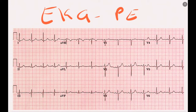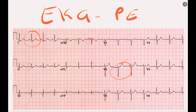This is a normal EKG that we're looking at right now. What's normal about it? Well, the voltages aren't too big, everything looks about the right size. It's sinus rhythm because you've got a positive P wave in two and the P wave is negative in AVR, so that's coming from the right spot. It's got a normal left axis because you're mostly upright in lead one and mostly negative in lead three. Everything else looks good — all the ST segments look flat.